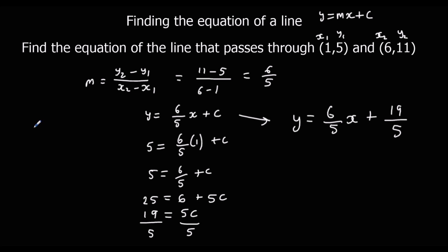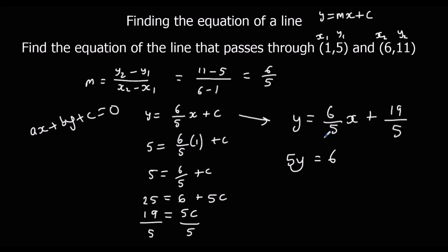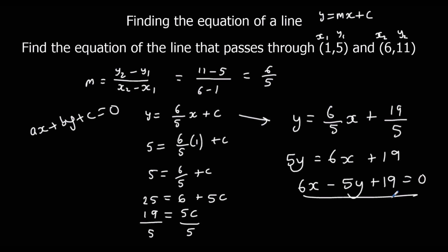Sometimes you might be asked to give the answer in the form ax plus by plus c equals 0. If they do that, we need to get rid of the fractions and make it equal to 0. To get rid of the fractions, like we did before, we multiply every term by 5. y times 5 is 5y; 6 fifths times 5 just gets rid of the denominator giving 6x; and 19 fifths times 5 is just 19. Then we take away 5y from both sides to make it equal to 0: 6x minus 5y plus 19 equals 0. Either one of those forms is correct — if they ask for this form you have to do that, otherwise y equals 6 fifths x plus 19 over 5 is fine.